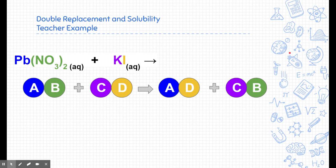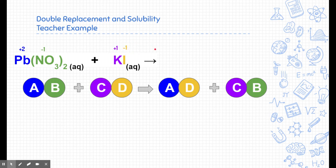To perform a double replacement reaction, I need to know the charges of each piece. Lead here has a positive two charge because it's attached to nitrate, which is minus one, and there are two of them. Potassium, from the periodic table, is positive one, and iodine is negative one. Lead (2+) is going to switch over and attach to iodine. With a positive two and a negative one, I need one lead and two iodines for this new partnership.